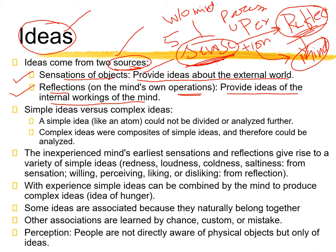Ideas come from sensation and reflection, and they are of two types: simple ideas and complex ideas. Simple ideas are like atoms — they cannot be broken down further. They are the most minimal, simplest form. Just like in math when you reduce something to its simplest form and it can no longer be analyzed further — that is the simplest form. Complex ideas are composites of simple ideas — when you combine many simple ideas, you get a complex idea.